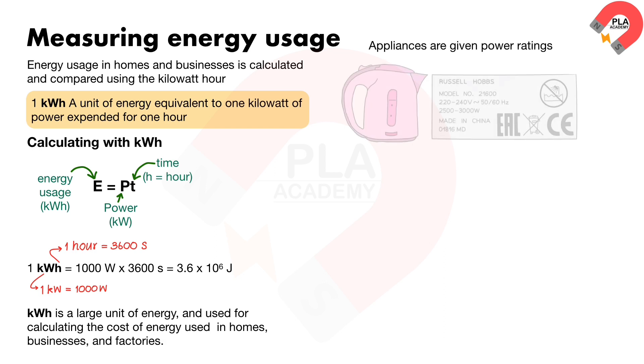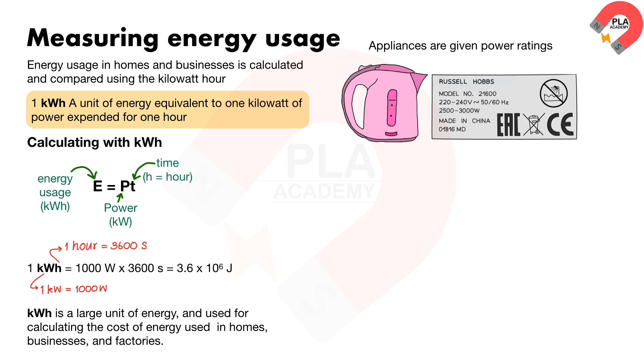Appliances are given power ratings as shown on the diagram. This power tells consumers that the amount of energy between twenty-five hundred joules to three thousand joules transferred by electrical work from the main power supply to the kettle every second. This energy is commonly measured in kilowatt-hour, which is then used to calculate the cost of energy used.